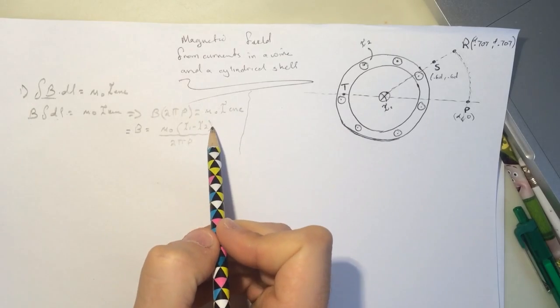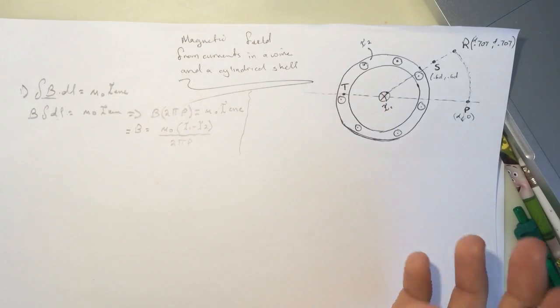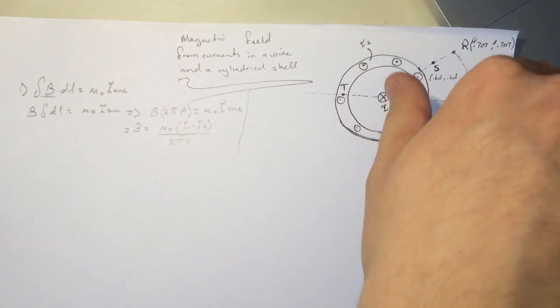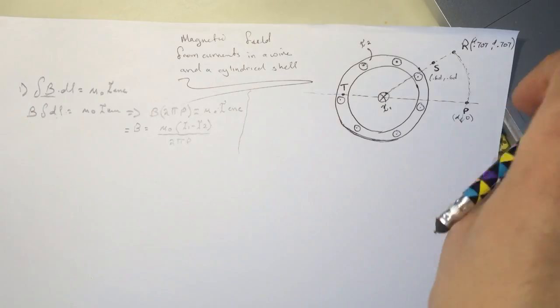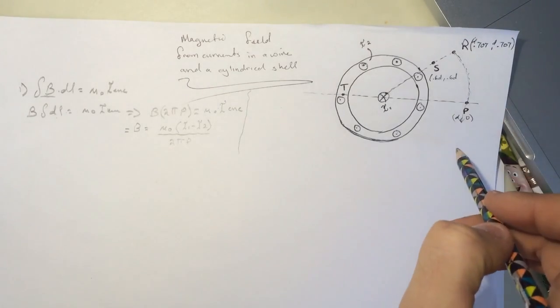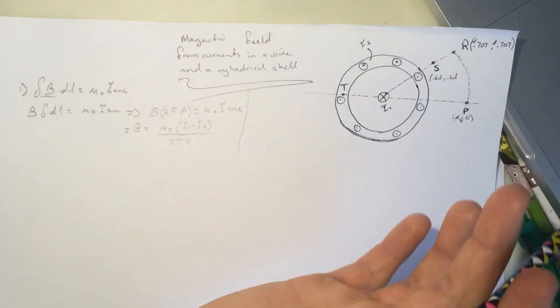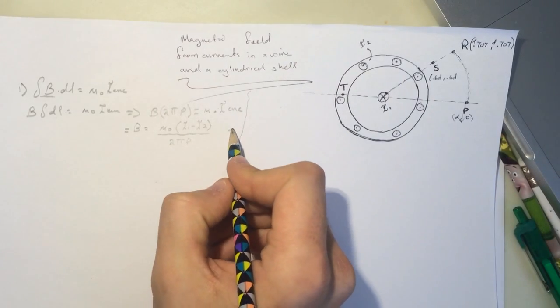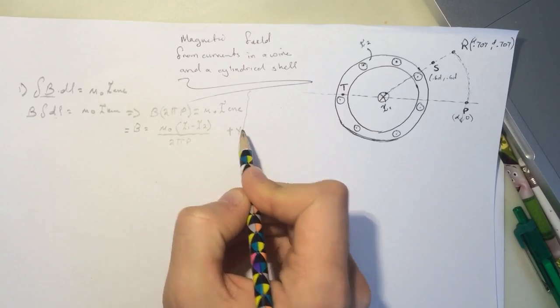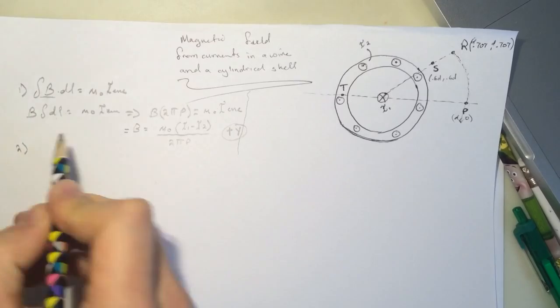And it depends on which one is bigger. If your I1 is bigger, then the magnetic field will be pointing down. If the I2 is bigger, then your magnetic field will be pointing up. And in my case it was up, so it was Y positive. Alright, so question number two.